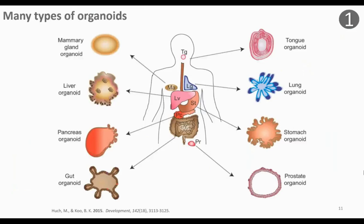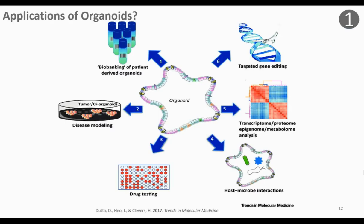Overall, organoids have been derived from many different organs. They can be derived from both normal tissue and cancerous tissues, and we even have organoids representing different diseases like cystic fibrosis. Organoids have shown potential in biomedical applications, translational medicine, and potentially personalized therapies. Today we'll be focusing on personalized cancer therapies to demonstrate my technology, but this technology could also apply to other applications as well.